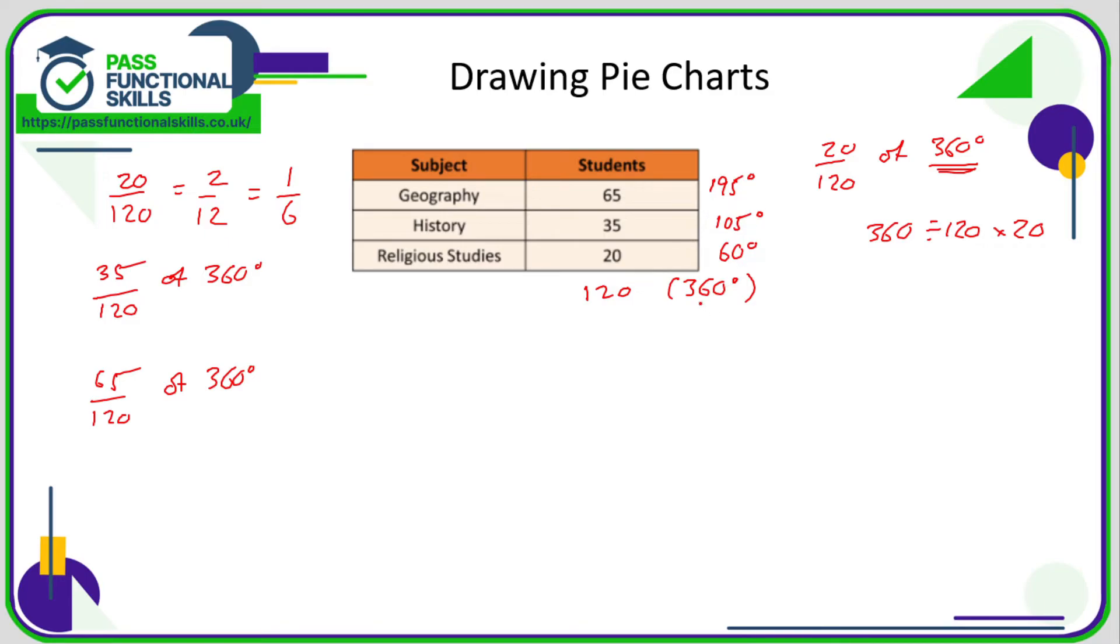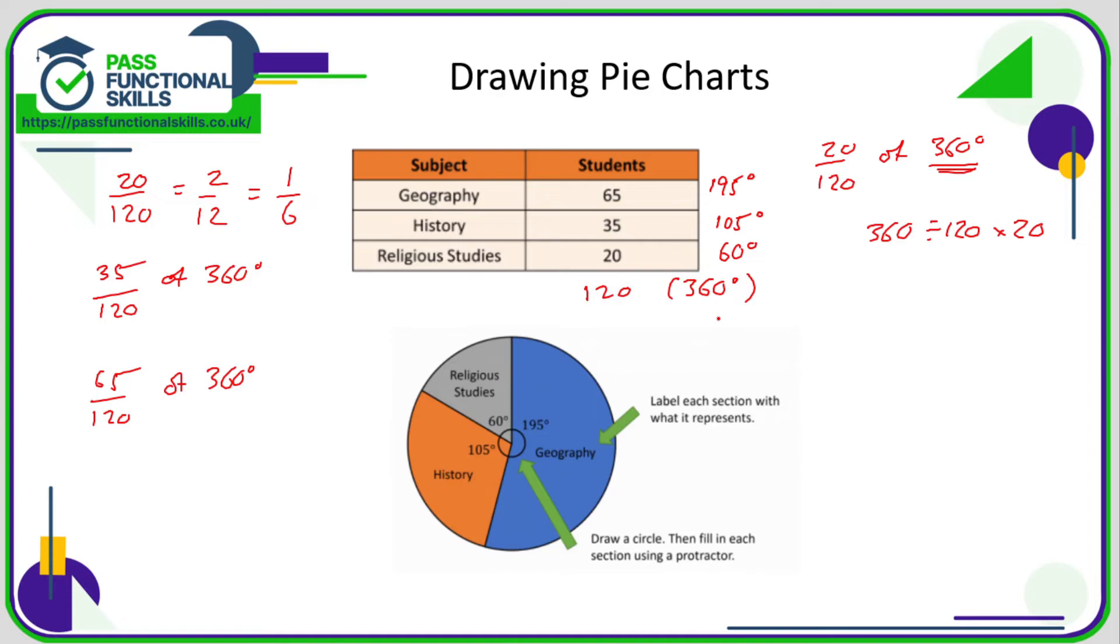And if we add these up, guess what these add up to? They add up to 360 degrees. Now all we need to do is draw a circle. Make sure we've got the center point marked in. Draw a line from here to anywhere on the circumference so that we've just got one line to get started.